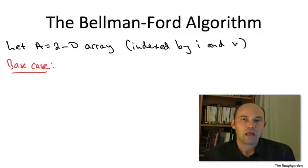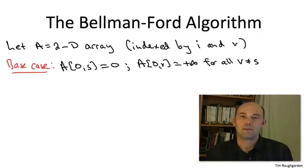But if V is any vertex other than S, then of course you can't get from S to V using zero edges. And remember in that case, we define the optimal value solution to be plus infinity.